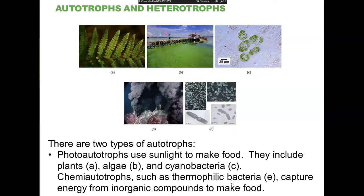The mid-Atlantic rift, hot springs, and geysers are great examples where there's a lot of thermal energy available. Photo-autotrophs are the other great camp of autotrophic organisms and by far the most abundant. All plants, algae, and cyanobacteria are photo-autotrophs, and they use the kinetic energy present in photons as a power source for generating their organic molecules from inorganic precursors.